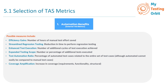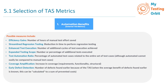Then we have coverage amplification: an increase in coverage across requirements, functionality, or structural aspects — assessing the broader coverage you achieve through automation. Next is early defect detection: the number of defects found earlier because of the TAS. When the average benefit of finding defects earlier is known, this can be calculated as a sum of prevented costs, so you can quantify the cost savings from finding defects earlier in the development process thanks to automation.